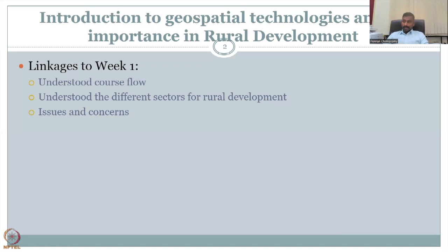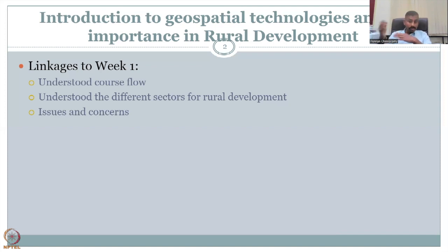We also looked at issues and concerns and how we are going to address them. The major issue is there are a lot of schemes and a lot of positive work that can be done. However, mapping the needy with the schemes is tricky. For example, we need to map water to water demand scenarios — if we don't know the water demand, it is hard to allocate water correctly.